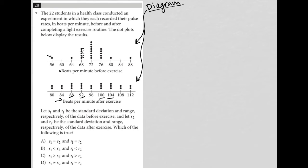The 22 students in a health class conducted an experiment in which they each recorded their pulse rates, n beats per minute, before and after completing a light exercise routine. Okay, so now we know that each of these dots represents a student at one point in time. All right, so the dot plots below display the results. Got it.